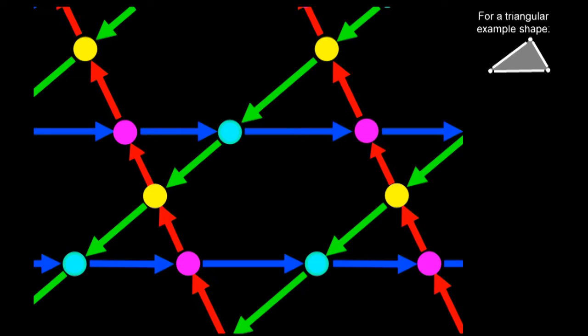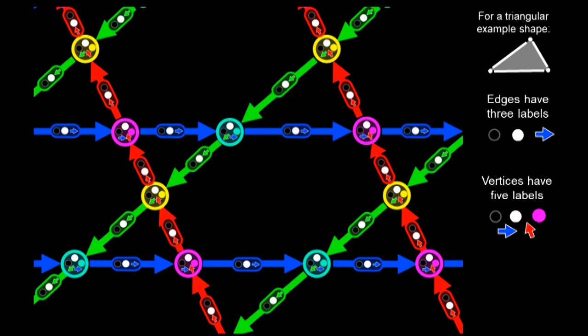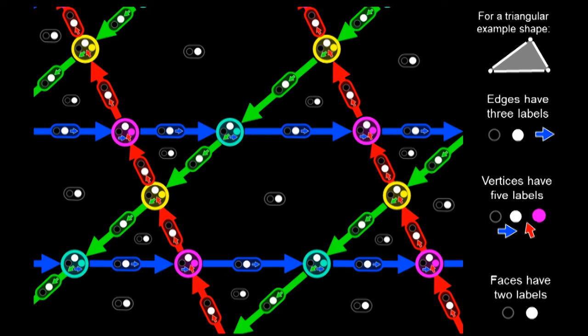Now we're just going to follow the same procedure we used before in the original model synthesis or in wave function collapse. We're going to start by filling in this diagram with every possible label. So the edges will have three possible labels. The vertices will have five. And the faces will have two possible labels, inside or out.